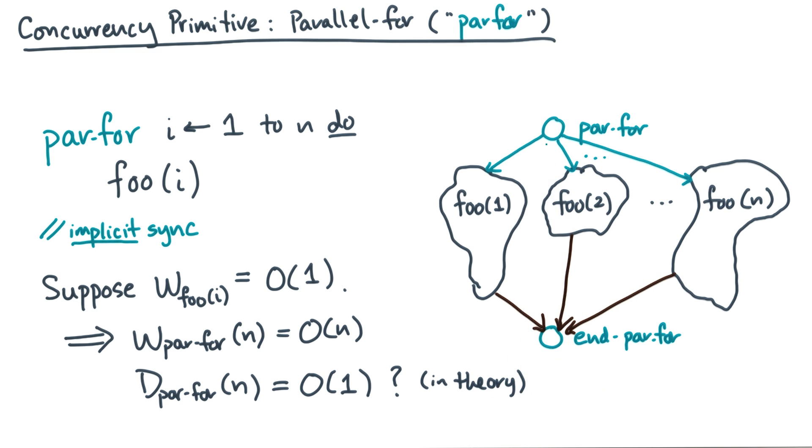So to understand this point, I want you to think about two different implementations of a par-for using only spawn and sync, and see what happens.